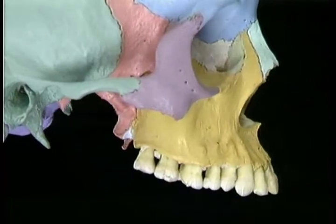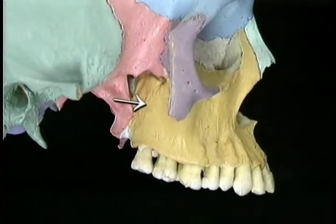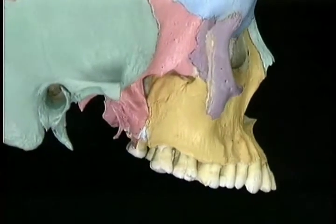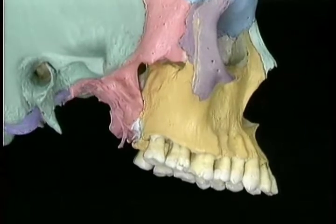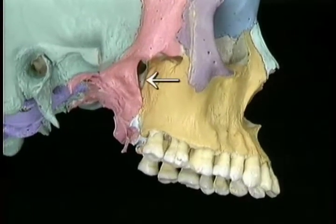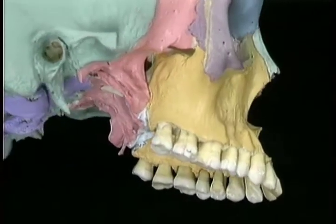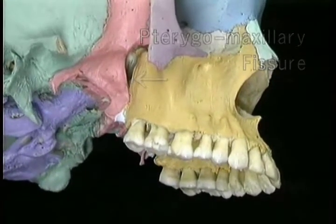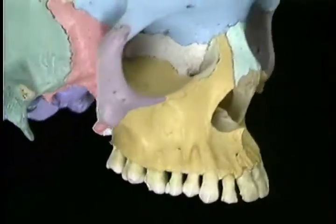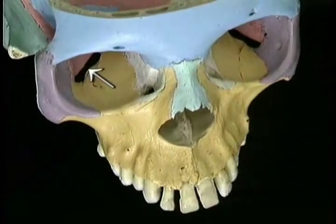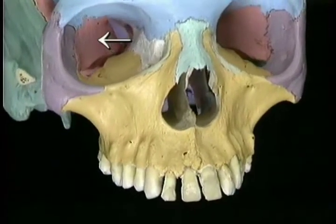To see the posterior part of the maxilla, we'll remove the zygomatic arch. Here's the back of the hollow part of the maxilla. Down here, the maxilla is joined to the bone behind it, the sphenoid bone. Apart from this attachment, the maxilla is separated from the sphenoid by an impressive cleft with a vertical part and a horizontal part. The vertical part is called the pterygomaxillary fissure. The horizontal part is called the inferior orbital fissure, which separates the floor of the orbit formed by the maxilla from the lateral wall formed by the sphenoid.